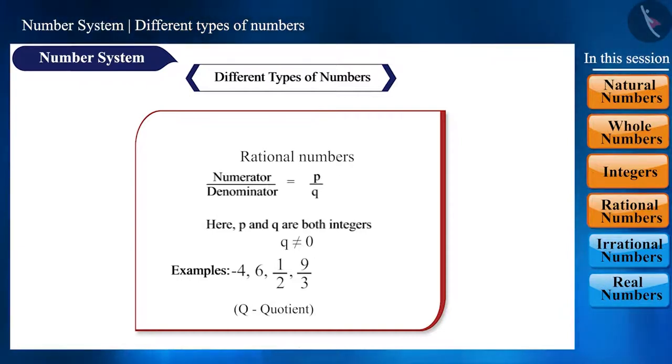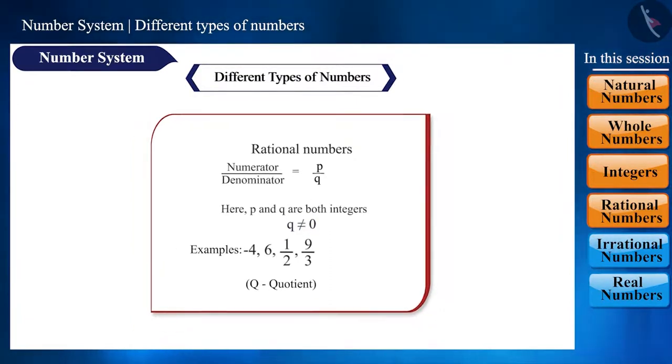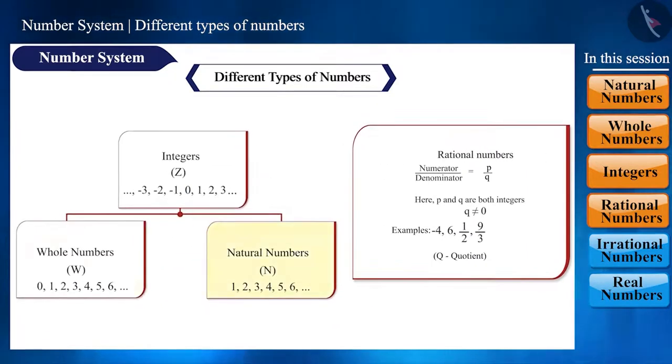But why quotient? Because P by Q is a fraction that gives us the quotient. Friends, if we pay attention to the definition, why is it said that Q should not be 0? And can we call all the numbers seen so far as rational numbers?